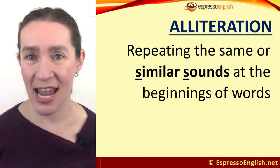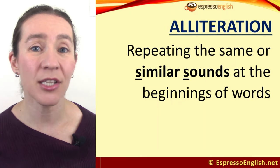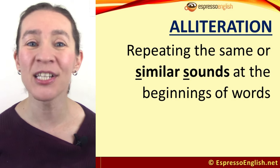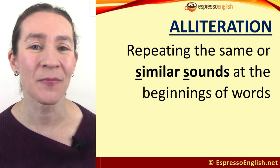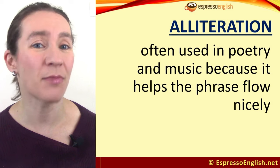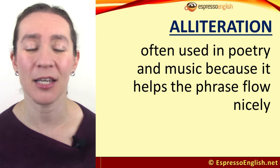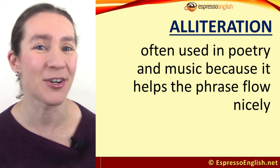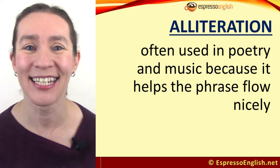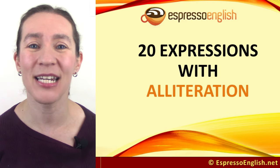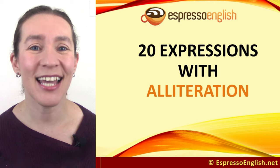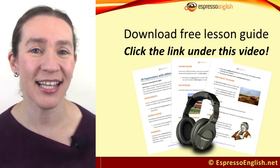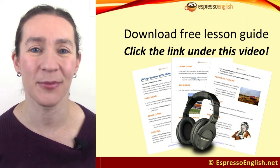Alliteration is repeating the same or similar sounds at the beginning of words. 'Similar sounds' — that's an example. Alliteration is often used in poetry and music because it helps the phrase flow nicely. 'Phrase flow' — there's another one. We also have a number of common expressions that use it. Today, you'll learn 20 of them, and you can download this lesson by clicking on the link in the video description.